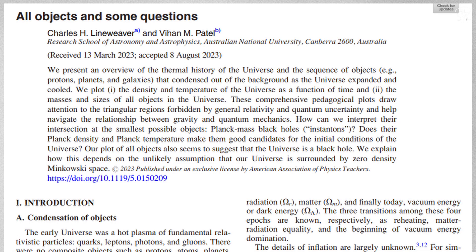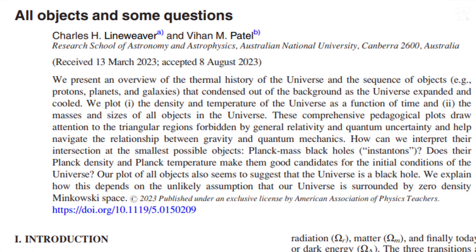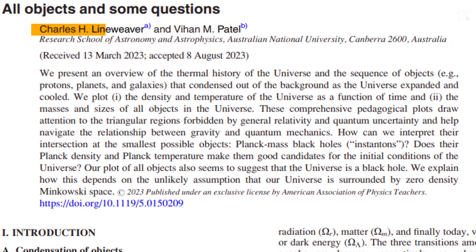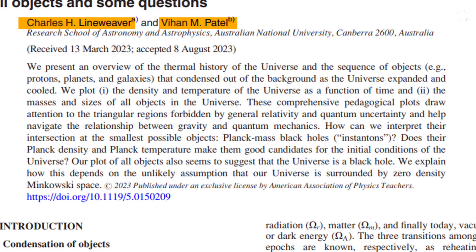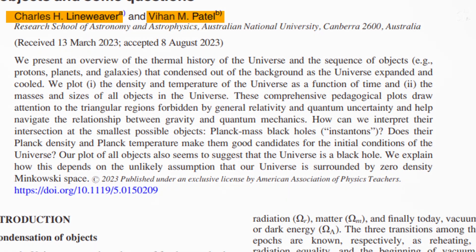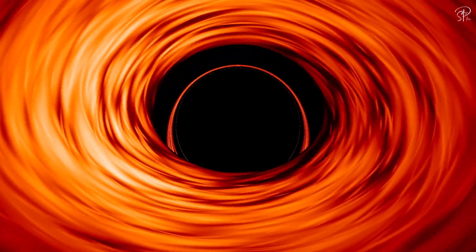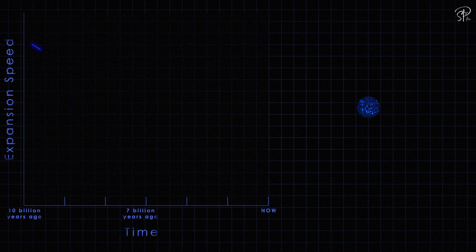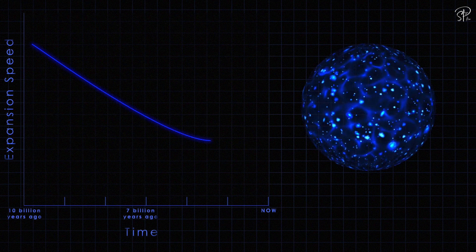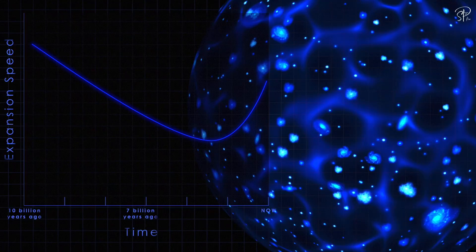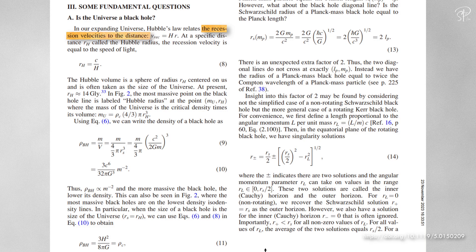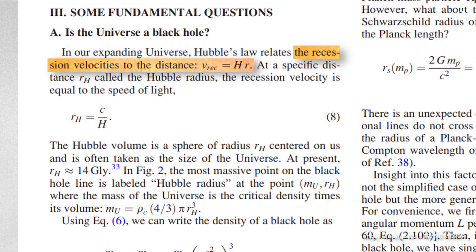Now coming to the recent paper. The recent paper, which was published about a month ago by Charles H. Lineweaver and Vyhan M. Patel, strengthens the possibility that our universe might be inside a black hole. They have explained that in our expanding universe, Hubble's law relates the recession velocity to the distance VREC equals to HR. At a specific distance called the Hubble radius, the recession velocity is equal to the speed of light or RH equals to CYH.